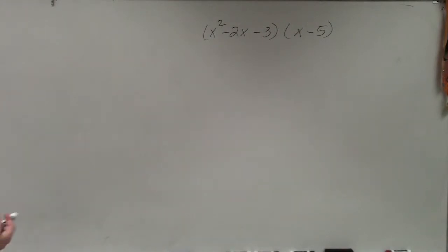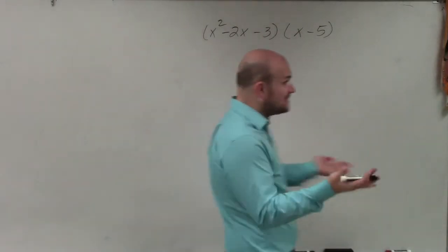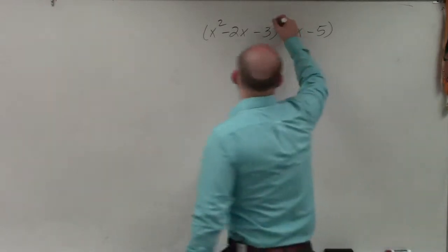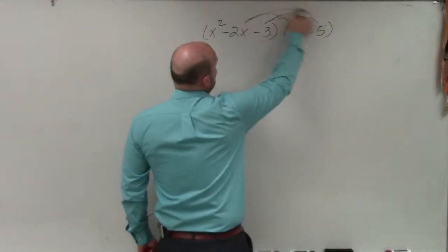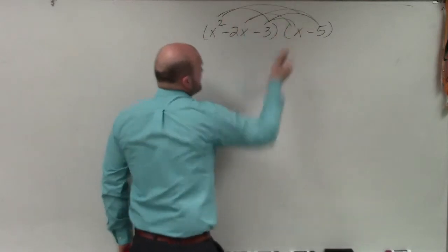And basically, ladies and gentlemen, just like you did before, just like the last problem, you can apply a distributive property in here. You can multiply this number times both of those, and then this number times both of those, then this number times both of those.